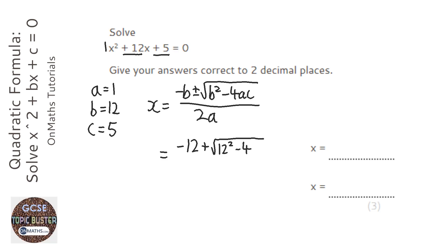times a, well that's just 1, so there's no point in doing it, times c, which is 5, over 2 times a, well 2 times 1 is just 2.